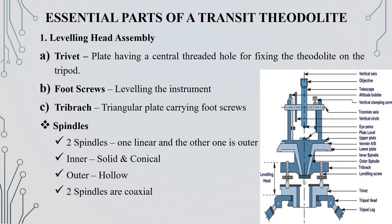The trivet is a plate with a hole in the center. We use it to fix the tripod. We will use the foot screws for leveling. We will adjust the foot screws to level the instrument.